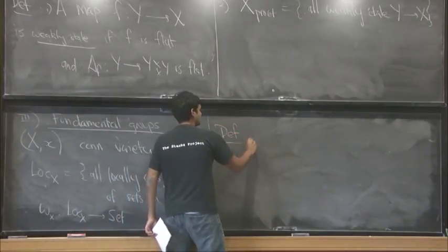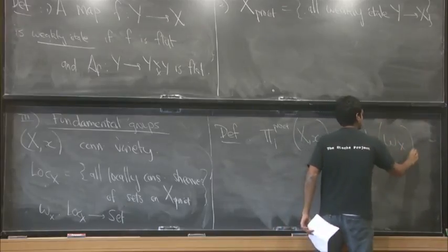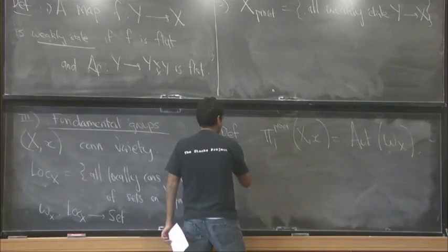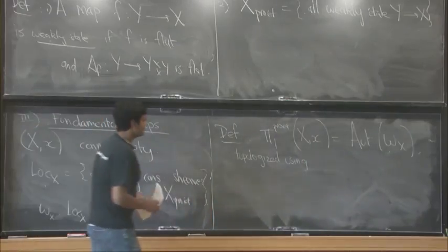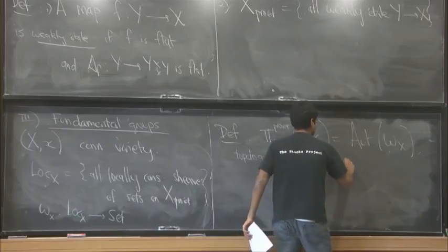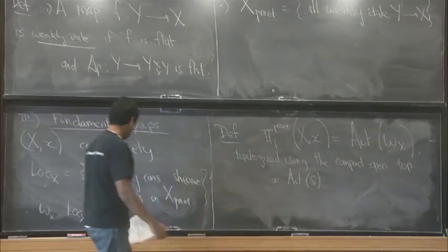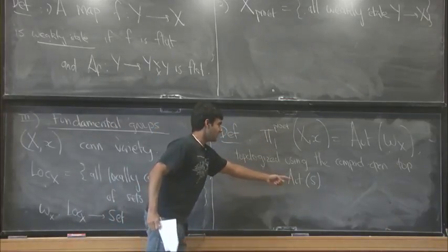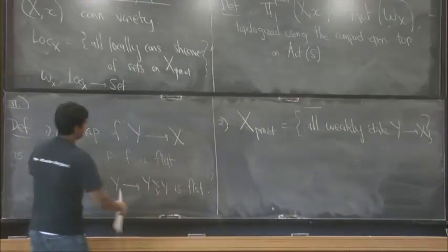So these are the basic objects and here's the group. So π_1 pro-étale of X, x is the automorphism group of this functor. So what do I mean? I mean for each object of this category, I have to specify an automorphism of its fiber. And these automorphisms have to be compatible with the structure of a category. And one needs to put a topology on this. So it's topologized using the compact open topology on the automorphism group of a set. So once again, for each object of this category, I have an automorphism of the set, which is its fiber. And so there's a map from this group to the automorphism group of the fiber. I have the compact open topology on the automorphism group of an infinite set and I just pull it back. So that's the group. It's very natural from the point of view of this topology.